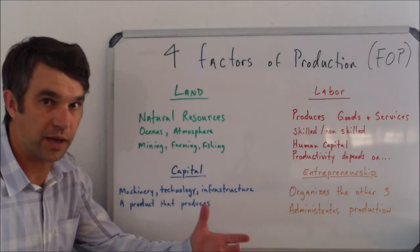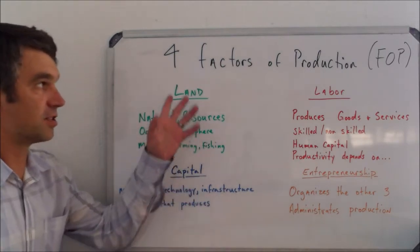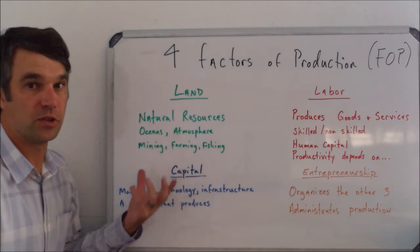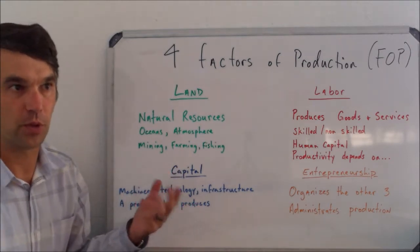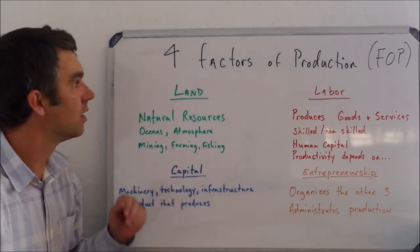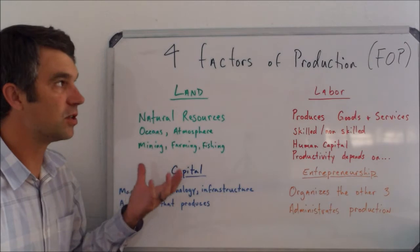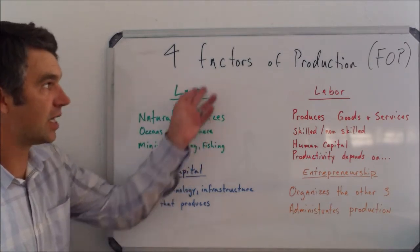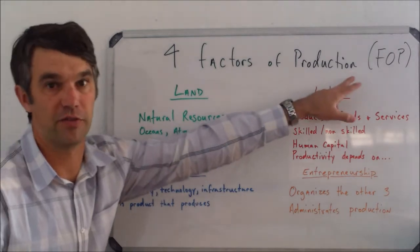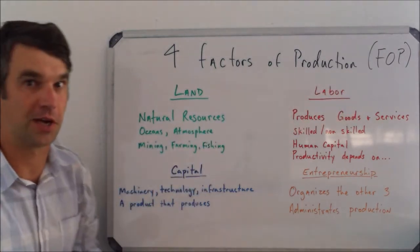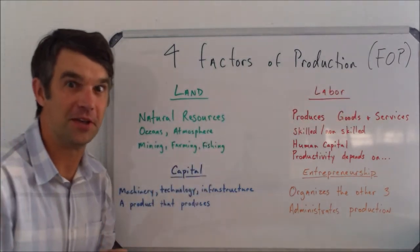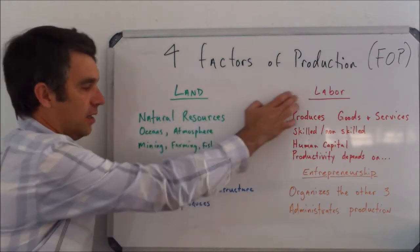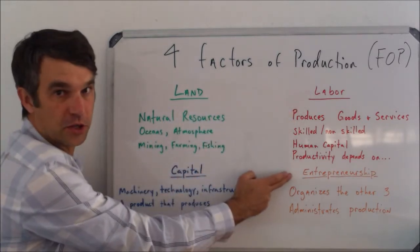Another very foundational part of economics is an understanding of what we produce things out of. When we produce goods or services, we have to make them out of something. We call these things the factors of production, or FOP for short, because we'll say it about a million times. The four factors of production are land, labor, capital, and entrepreneurship.